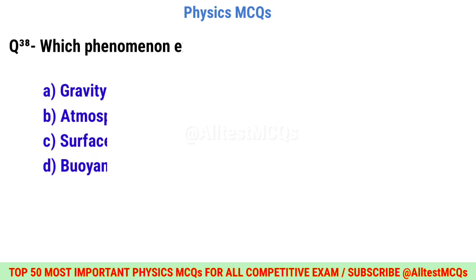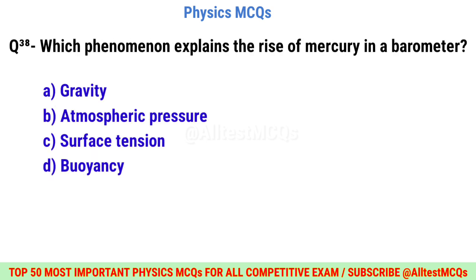Question number thirty-eight: Which phenomenon explains the rise of mercury in a barometer? Correct option is B: Atmospheric pressure.